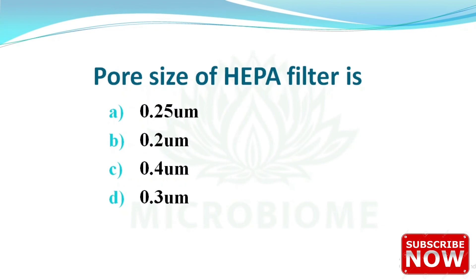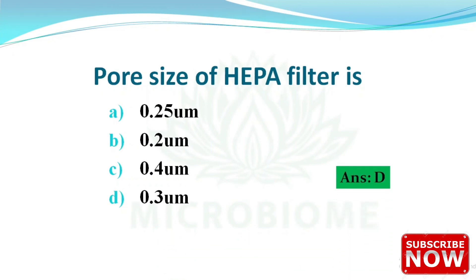Next: what is the pore size of a HEPA filter? The options are 0.25 µm, 0.2 µm, 0.4 µm, and 0.3 µm. The right answer is option D — 0.3 µm. HEPA stands for High Efficiency Particulate Air. A laminar airflow unit has two filters: a pre-filter and a HEPA filter.